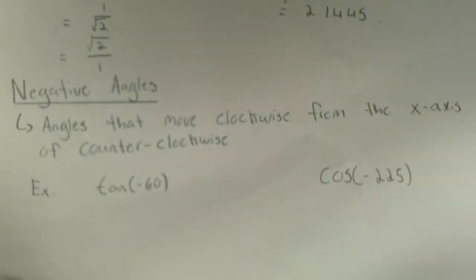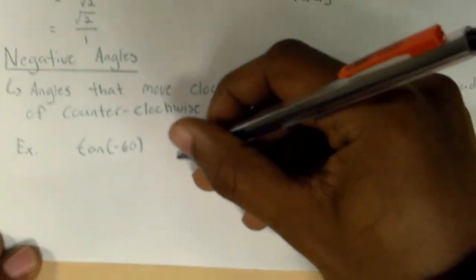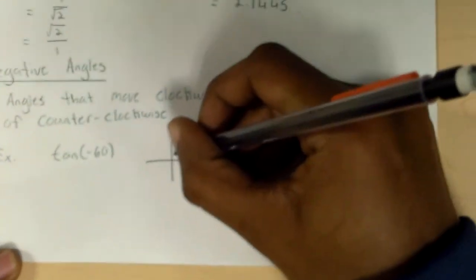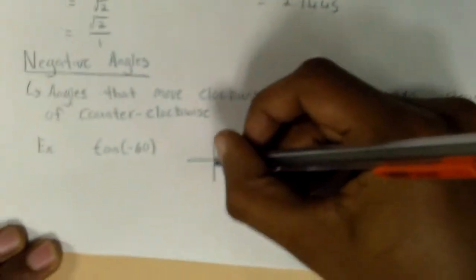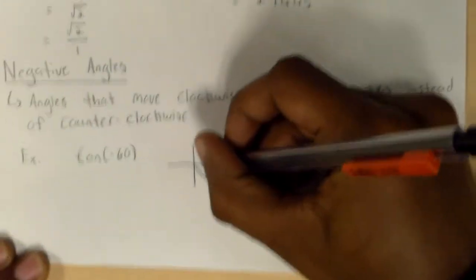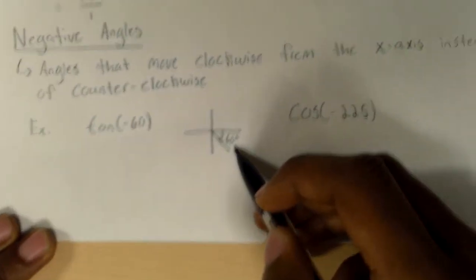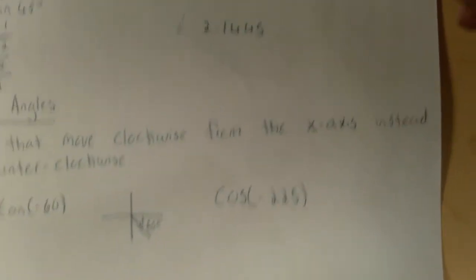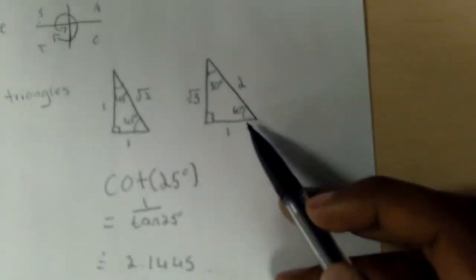And to solve for tan of negative 60, you first draw your diagram. So it goes clockwise, so it would be 60 degrees this way. And we know that 60 degrees is part of one of the special triangles. So the tangent of 60 would be, tangent is opposite over adjacent, so the square root of 3 over 1.